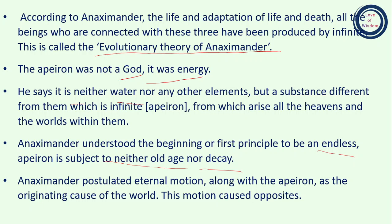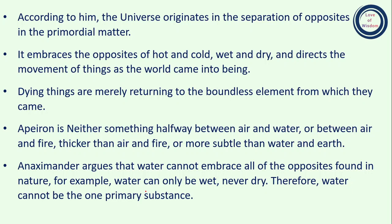Anaximander postulated eternal motion along with the Apeiron as the originating cause of the world. He says that in this scene there is an eternal motion that always persists. This motion caused opposites. According to Anaximander, the universe originates in the separation of opposites — opposites like hot and cold, wet and dry, darkness and light. The universe is built from the separation of these opposites. It embraces the opposites and directs the movement of things as the world came into being through this separation of opposites.